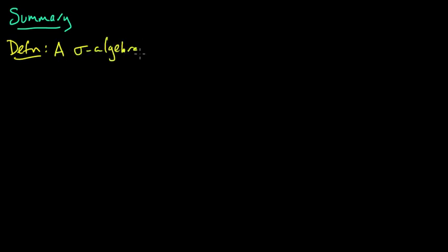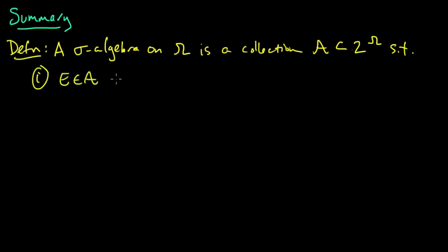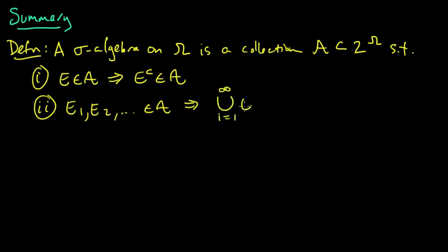A sigma algebra on omega, a set omega, is a collection A which is contained in the power set of omega. So it's a collection of subsets of omega. Such that one, if a set E is in A, that implies its complement is in A. So it's closed under complements. And two, if a countable sequence of sets is in A, that implies the union of all of them is in A. So it's closed under countable unions. And this implies that it's also closed under finite unions.